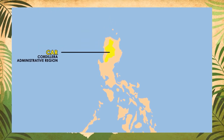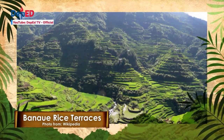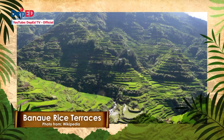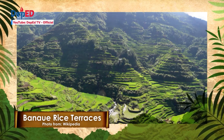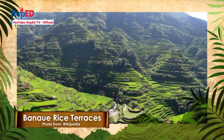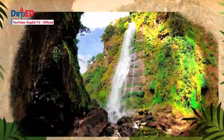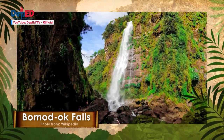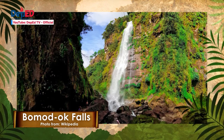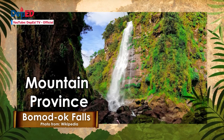Punahin natin ang CAR o Cordillera Administrative Region. Para sa anyong lupa, dito matatagpuan ang tanyag na Banaue Rice Terraces o hagdang-hagdang palayan na sinasabing mahigit 2,000 taon na ang tanda. Ito ay matatagpuan sa lalawigan ng Ifugao. Para naman sa anyong tubig, sa CAR din matatagpuan ang tanyag na Bomod-ok Falls. Ito ay nasa lalawigan ng Mountain Province.